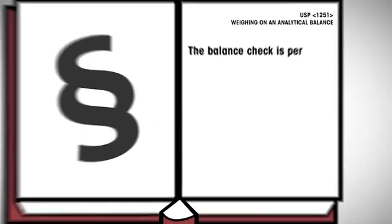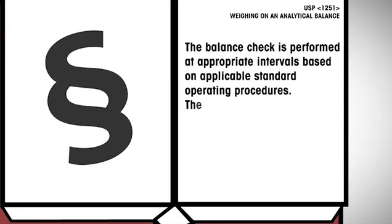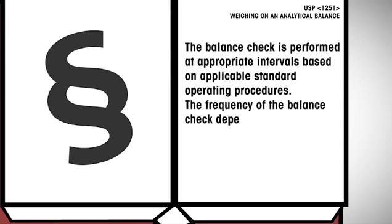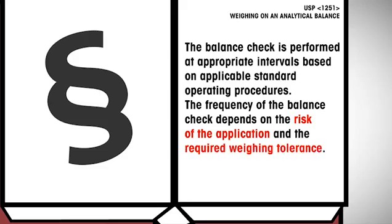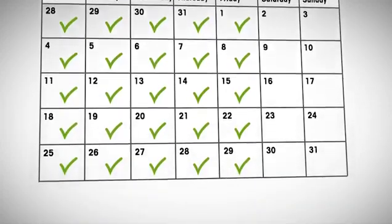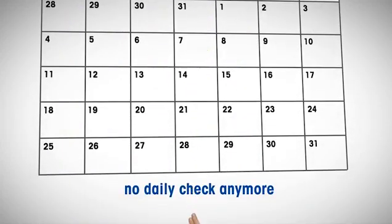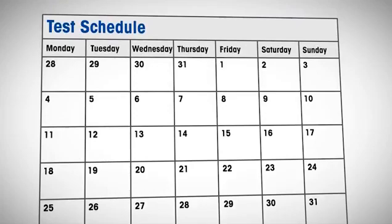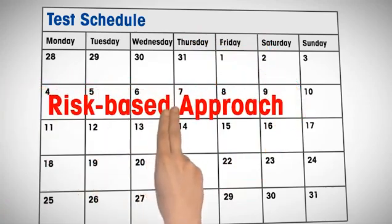The balance check is performed at appropriate intervals, based on applicable standard operating procedures. The frequency of the balance check depends on the risk of the application and the required weighing tolerance. Note that the new regulation does not mention a daily check anymore, as it was the case in the old Chapter 1251. Reflecting current good manufacturing practices, the new USP regulation now recommends a risk-based approach to determine appropriate frequencies of testing.